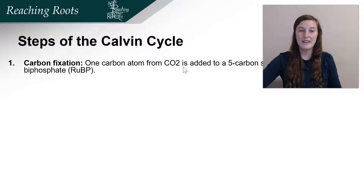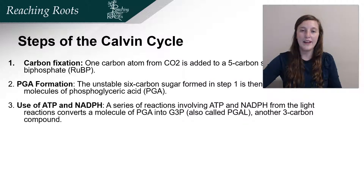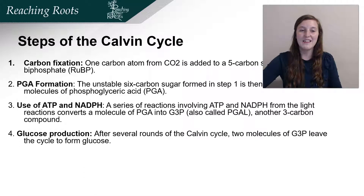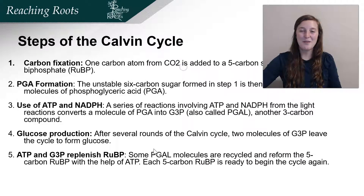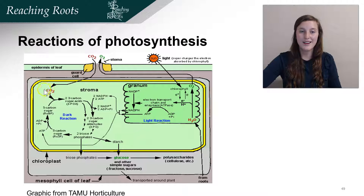Let's review these steps. In step one, carbon fixation occurs — this is done by Rubisco. In step two, PGA is formed. In step three, the use of ATP and NADPH turns PGA into G3P, also called PGAL. In step four, glucose production happens. In step five, ATP helps replenish the RuBP so the cycle can continue. This graphic shows the same process: carbon dioxide enters, we have PGA, we have G3P, sugar is produced, and then ATP is used to replenish RuBP.